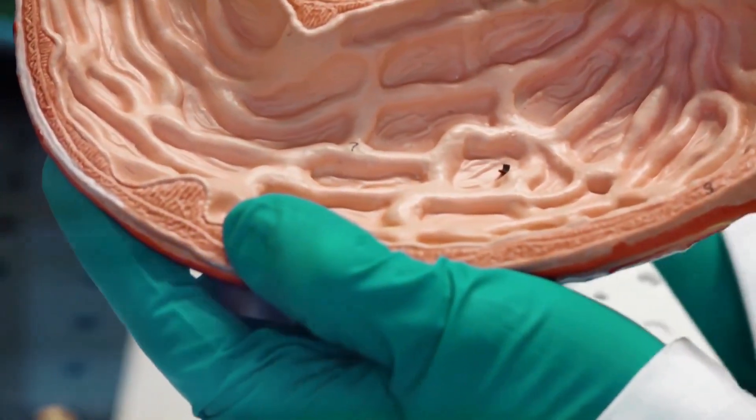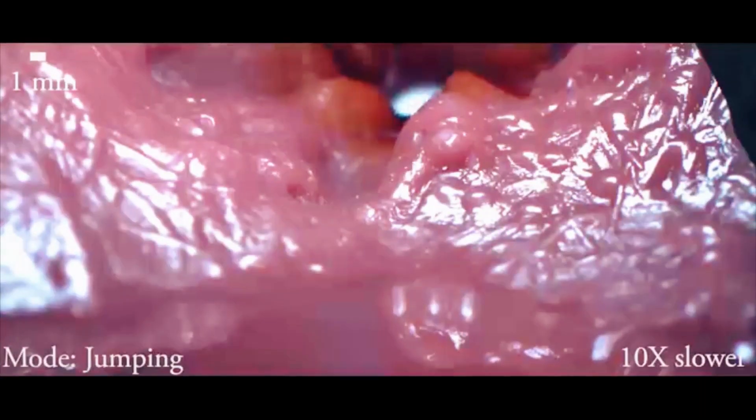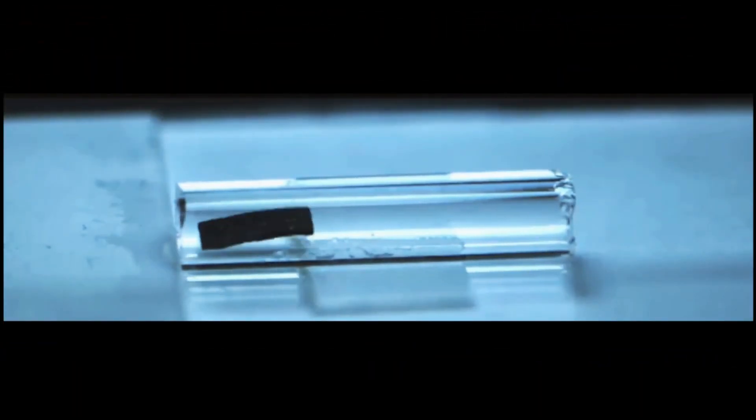Next is the Millirobot, built at ETH Zurich. It moves like a tiny worm, crawling or swimming through the body, carrying drugs to where they're needed most.